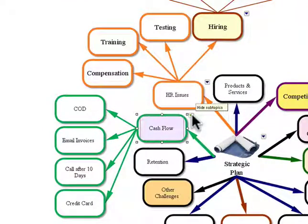Cash flow could be caused by a number of problems, but one way to improve it would be COD. Another way, email the invoices when the product goes out. Have a strict policy of calling after 10 days, and maybe they have to put on a credit card before they even buy it. But the fact is, again, everything is on the same page.